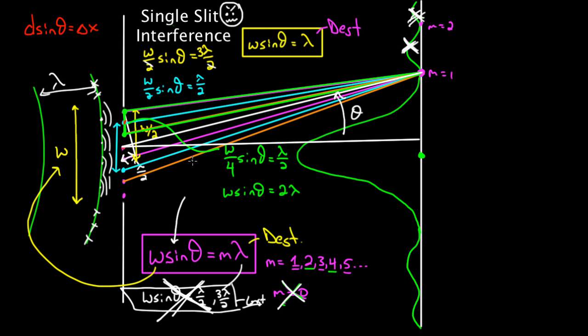Specifically, I'm going to try to show you that this same argument that we made for the destructive points won't work for the constructive points. And I think that'll help a little bit. In other words, this half-wavelength relationship won't give the constructive points — not exactly. It'll give it approximately, but it won't work exactly.